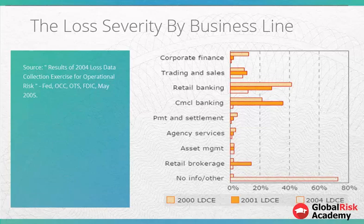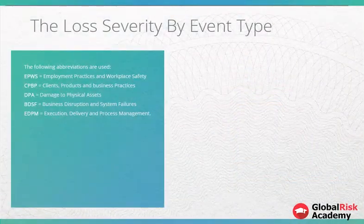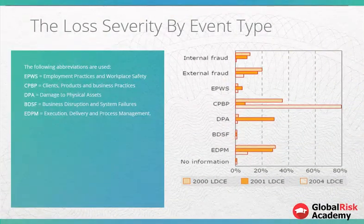For example, the September 11th terrorist attacks and the Enron collapse. The following figures describe the loss severity by business line and by event type across three LDCEs.